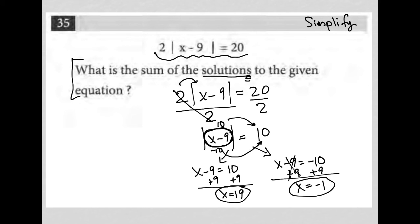So what are we looking for? We're looking for the sum of the solutions. So I'm just going to say, well, 19 plus, because it says sum, and then negative 1, well that's just equal to 18. So our answer here, the sum of the solutions, solution 1, solution 2, is 18.